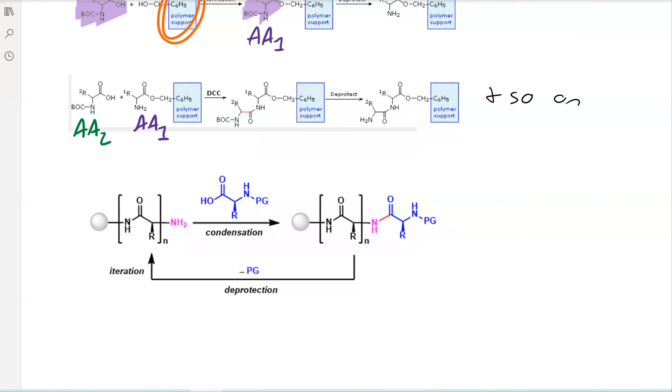You have your insoluble polymer support, you start adding your amino acids with their protecting groups, you deprotect the amino acid, and then add on another amine. As you can see, this is a very iterative step.